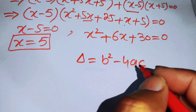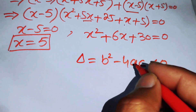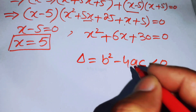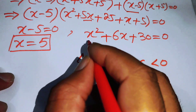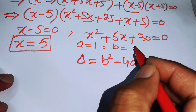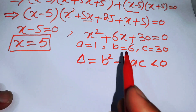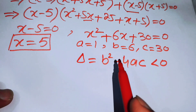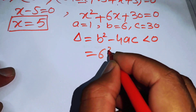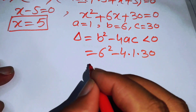The discriminant delta equals b squared minus 4ac. If delta is less than 0, the roots are complex; if delta is greater than or equal to 0, the roots are real. Here, a equals 1, b equals 6, and c equals 30. Substituting: delta equals 6 squared minus 4 times 1 times 30.